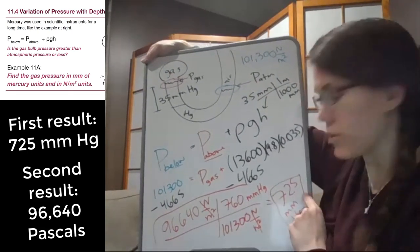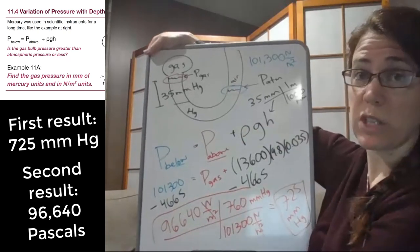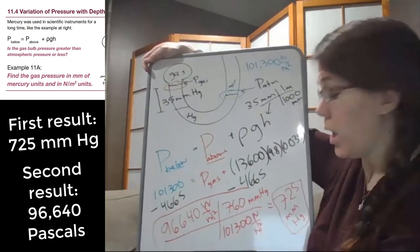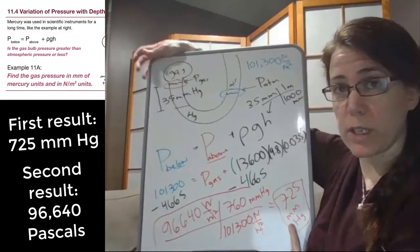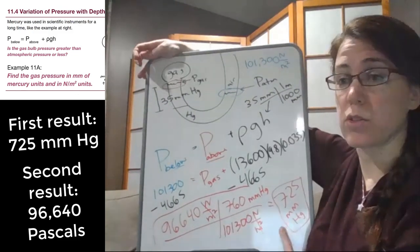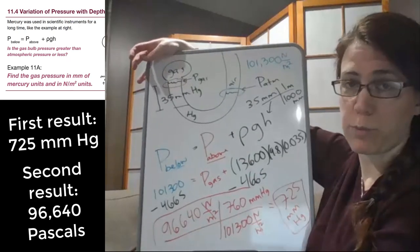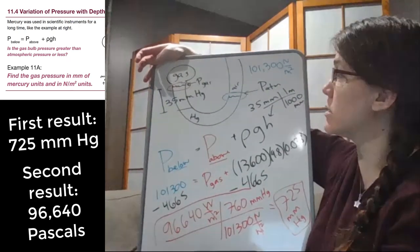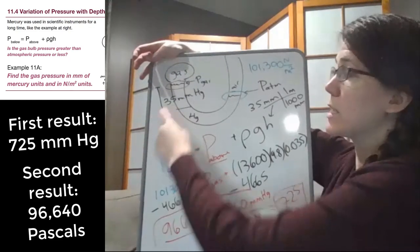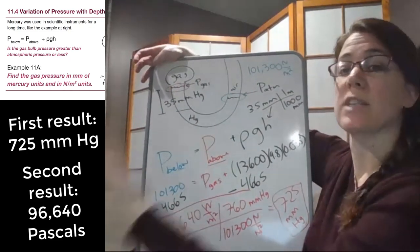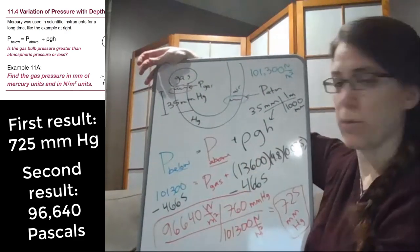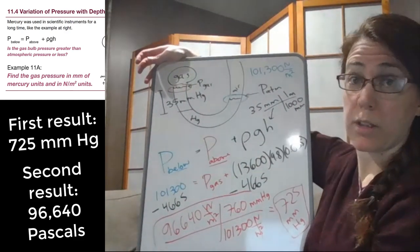So if the millimeters of mercury unit doesn't make sense to you, that's fine. Just use our standard equation with standard units. But it is equivalent, and it is an answer that we can use, that when we look back at the first part of this, all we had to do was take 760 millimeters, subtract it by that 35 because the gas pressure was smaller by that much, and then we got our answer without having to do any more complex calculations here.